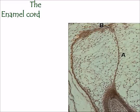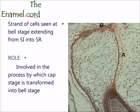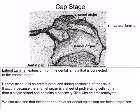The transient or temporary structures seen during development are: the enamel knot, and the enamel cord or septum. The enamel cord is a strand of cells extending from the inner enamel epithelium to the outer enamel epithelium. The invagination in the outer enamel epithelium is called the enamel navel. It is involved in the process by which the cap stage transforms into the bell stage. The enamel niche is an artifact seen when the tooth germ appears to have a double dental lamina, but in reality only one exists — mesenchymal tissue was entrapped during preparation.